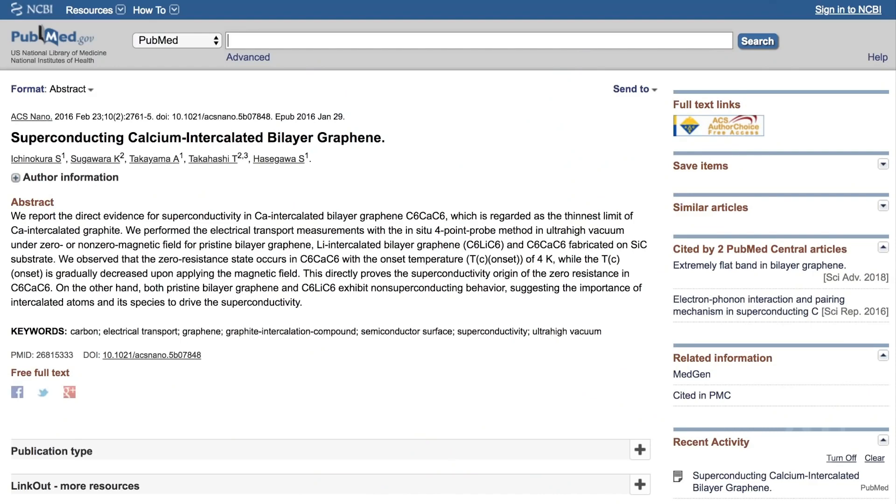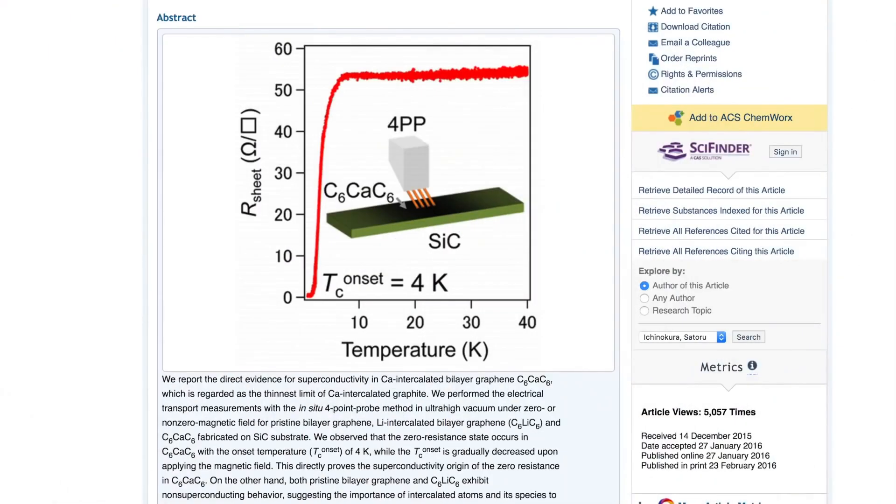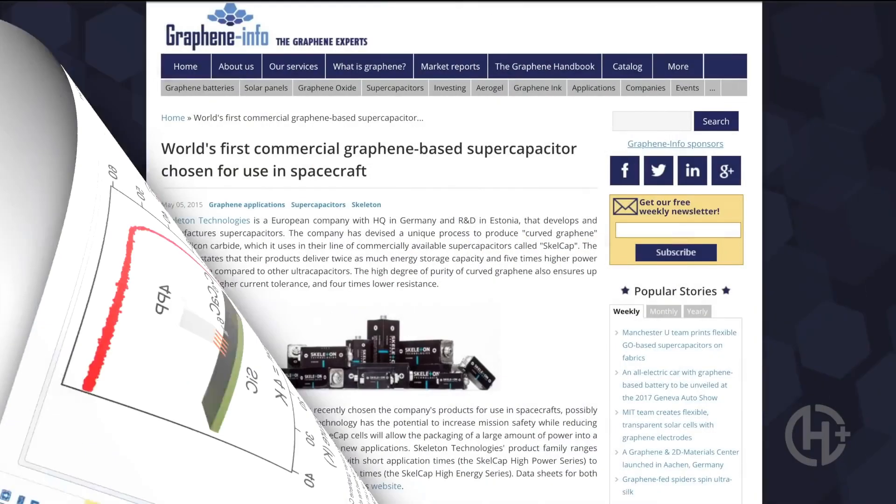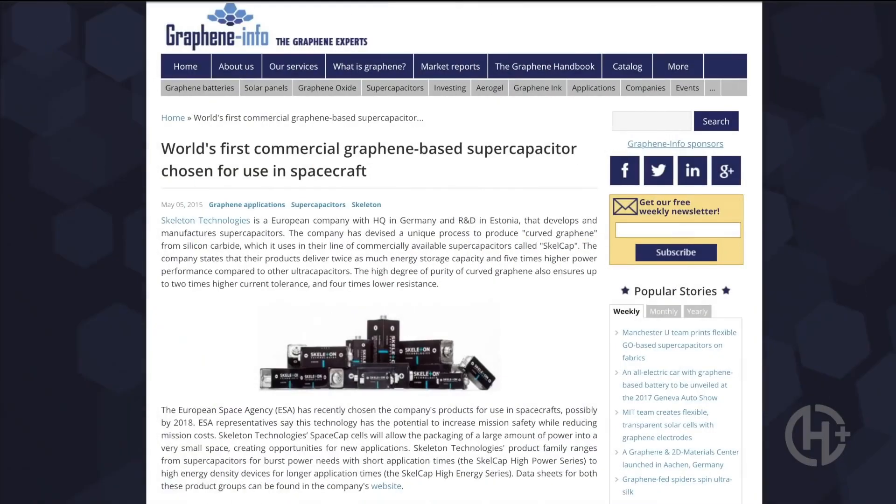Scientists were able to achieve superconductive abilities in graphene by doping the material with calcium atoms. These graphene supercapacitors, produced by Skeleton Technologies, are now available for industrial power applications.